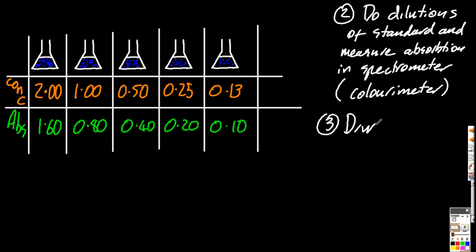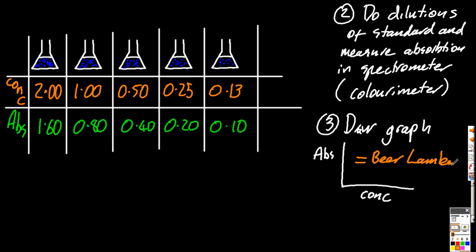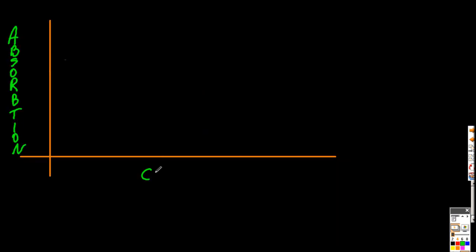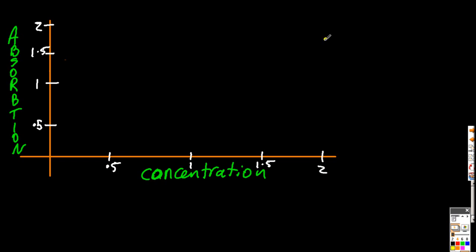So step three: I've got to take this data of different concentrations and their different amounts of absorption, and put them on a graph. That's the Beer-Lambert graph we're making here — absorption versus concentration — and it should be a straight line. If it starts to bend towards either of the ends, then it's not very useful anymore; you've just got to keep to the part that's straight. The theory you're using here is the Beer-Lambert law: absorption is proportional to concentration.